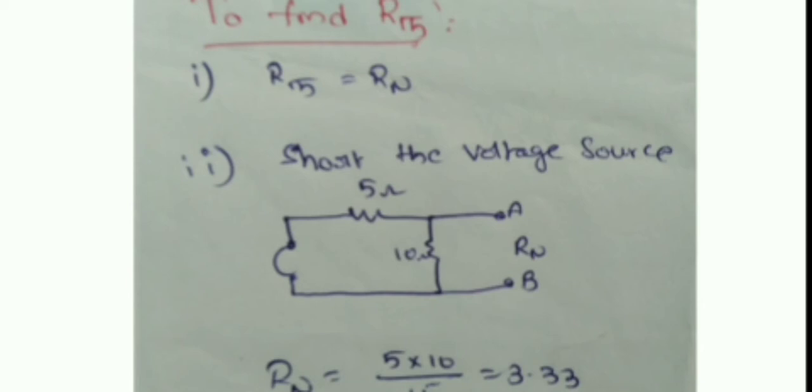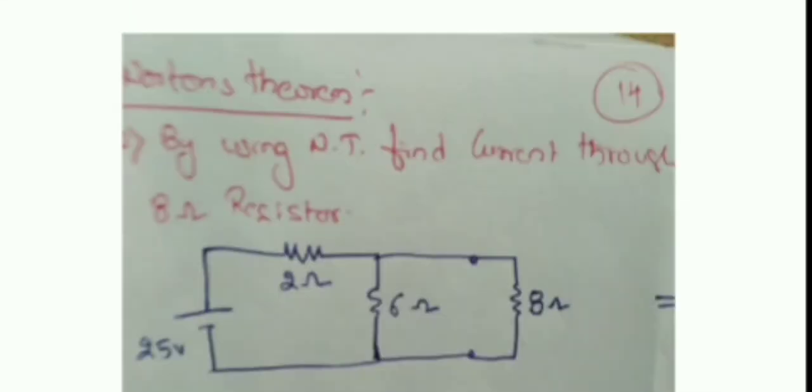R_Thevenin equals R_Norton. By short-circuiting the voltage source, you can find R_Norton equal to 3.33 ohms. The final circuit is a current source — Norton's current source in parallel with Norton's resistance and in parallel with RL. Substituting I_Norton equal to 4 amperes, R_Norton equal to 3.33 ohms, and RL equal to 6 ohms, and using the current division principle: IL equals total current multiplied by opposite resistance divided by total resistance. IL is equal to 1.43 amperes.